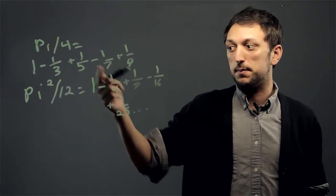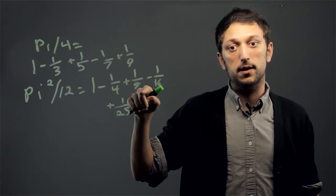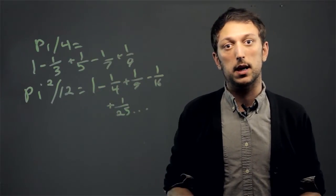The same thing is happening here, except now we're squaring denominators. First we subtract, then we add, and these are two ways of approximating pi by hand.